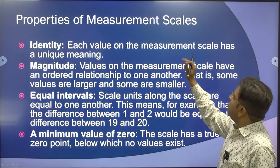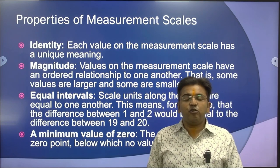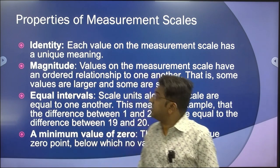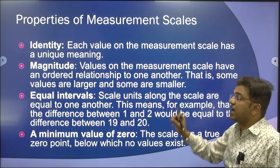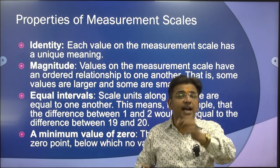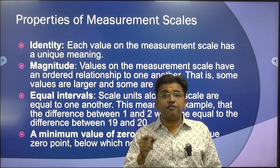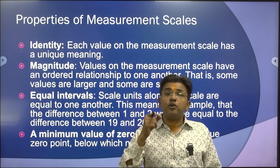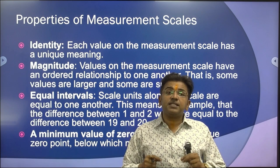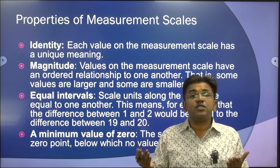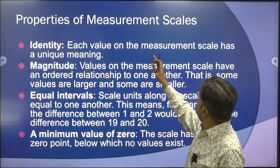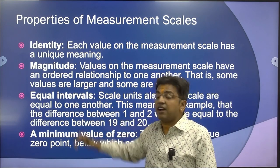Now, properties of measurement scale. For a good measurement scale, the first property is identity — each value of the measurement scale has a unique meaning. As shown earlier, every unit has a unique identity. If your height is 5 feet 10 inches, that is a unique quality of your personality. If a person's weight is 90 pounds, that has a unique identity. So when we scale things, the main property is that it must have identity.